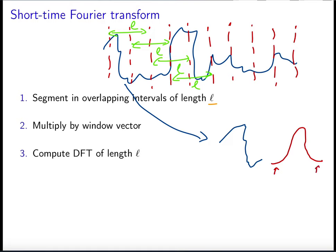We're going to multiply each piece by a window function. The window function is going to decay smoothly to zero on the borders to produce less distortion in frequency. So we multiply and obtain a windowed segment, and then we compute the DFT of this — because this segment is now of length L. This is essentially the short-time Fourier transform; we're going to do this for all the segments.